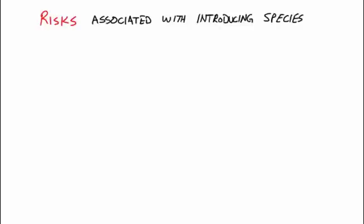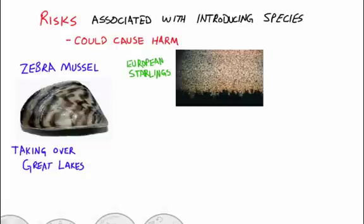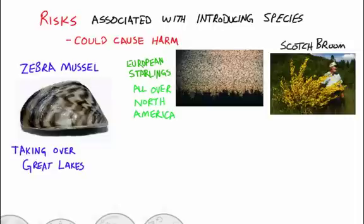When we introduce new species — even for biological control — there are always risks. The main risk is that the introduced species could cause harm. For example, the zebra mussel was introduced into the Great Lakes with no natural predator and is slowly taking over and replacing natural species. European starlings, started from just a few birds released in Central Park in New York, are now in the millions all over North America. Scotch broom was introduced into BC with just a few seeds and is now taking over large areas.